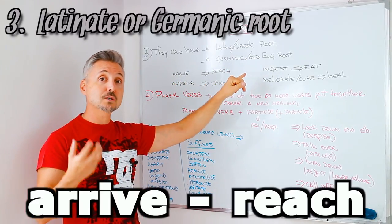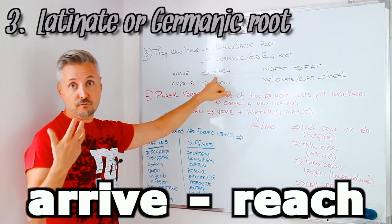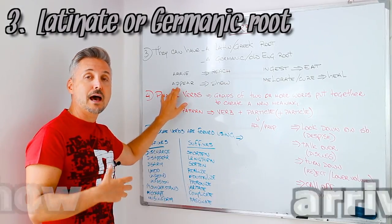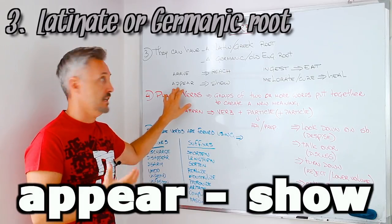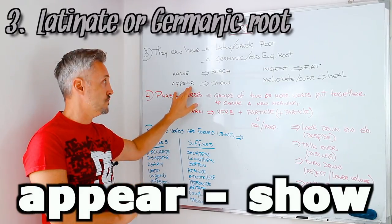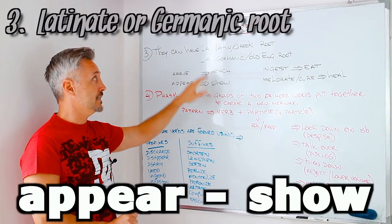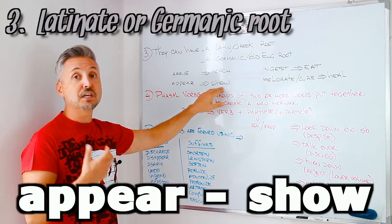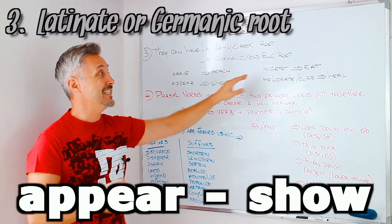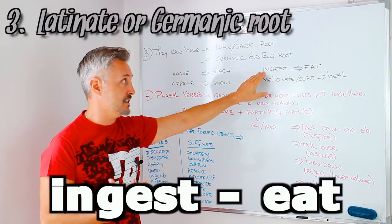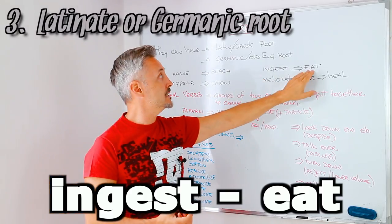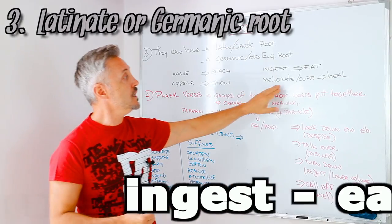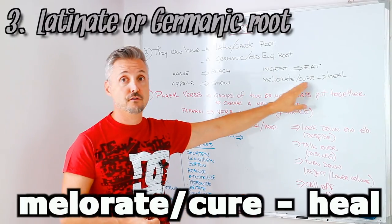So, let's look at some examples. We have arrive from arrivare in Latin. Arrive, and the Germanic or old English root verb could be reach. So, another one. Apparire in Latin. Appear. So, is in English, right? Appear. And the Germanic or old English verb would be show. Ingest. Ingest. From Latin. And eat. From old English or Germanic. Meliorate or cure from Latin. To heal is the Germanic or old English.